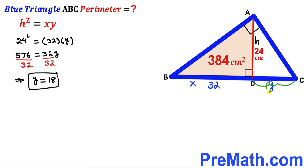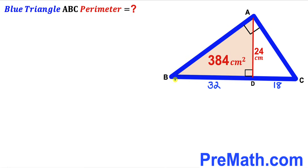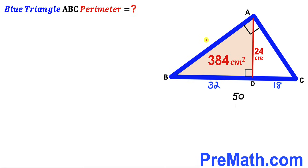So segment CD, which is y, turns out to be 18 centimeters. Therefore the whole side BC turns out to be 32 + 18 = 50 centimeters. Now we are going to calculate side AB length and likewise side AC length as well.